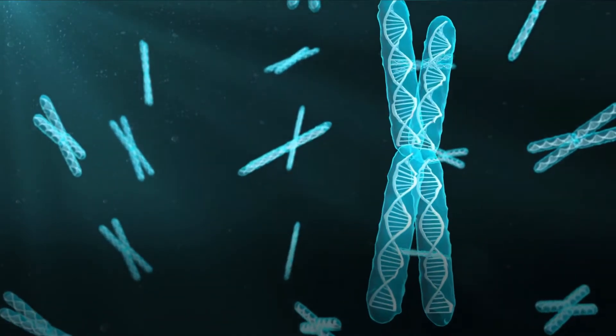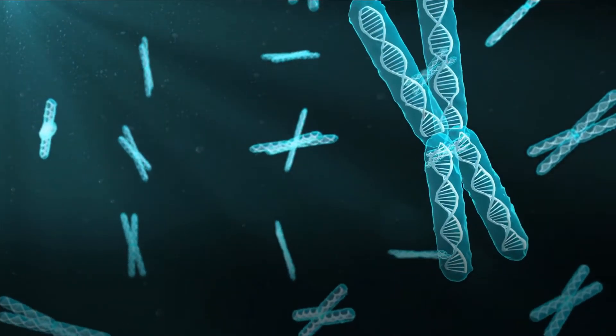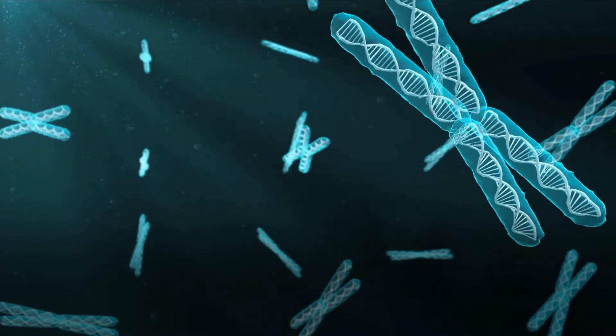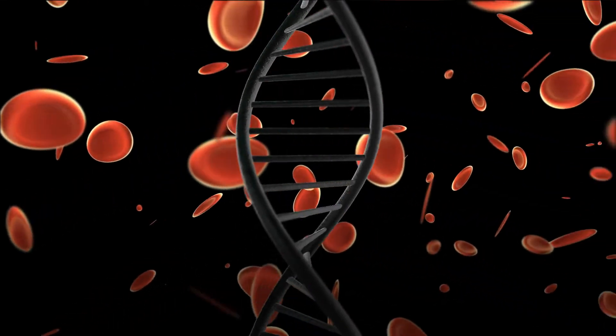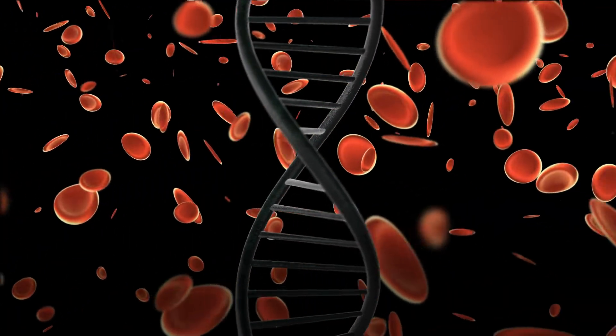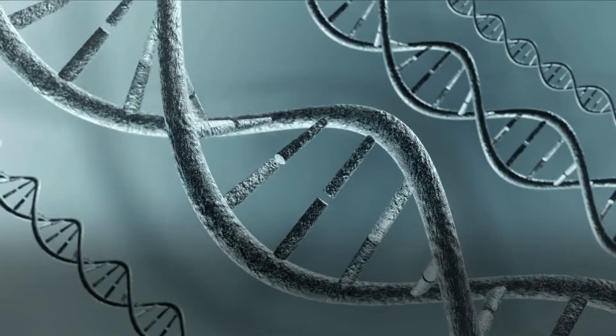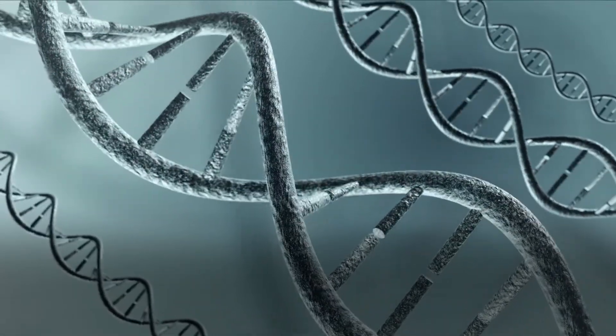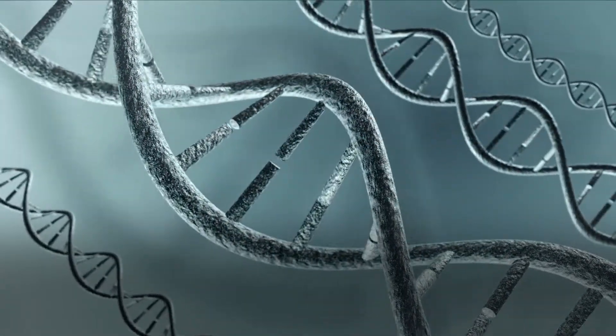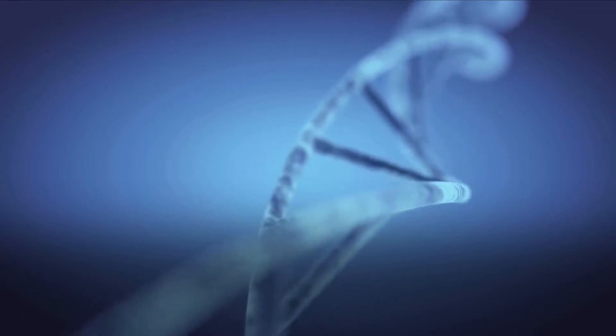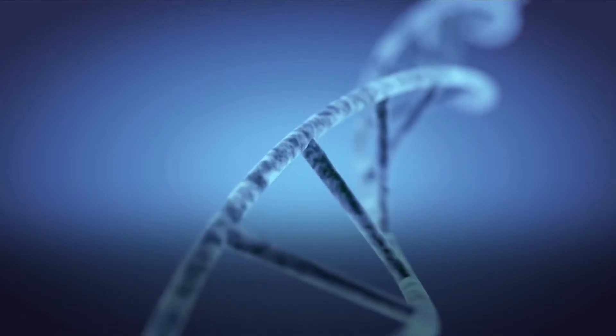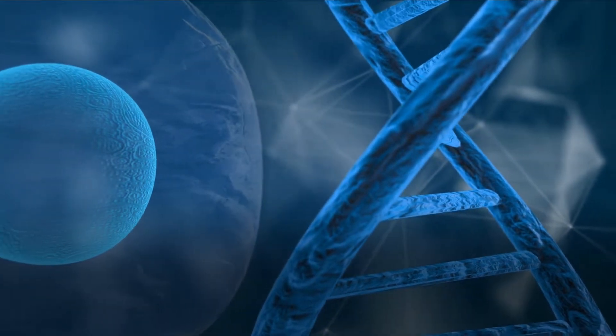An allele is the version of a gene that is passed down from one parent to their child. If two alleles from each parent are different, the body will only be able to take instructions from one of the alleles. The dominant allele is the allele from which the cell receives instructions. The other type of allele is referred to as the recessive allele. Some genetic conditions are caused by a dominant allele, whereas others are caused by a recessive allele.